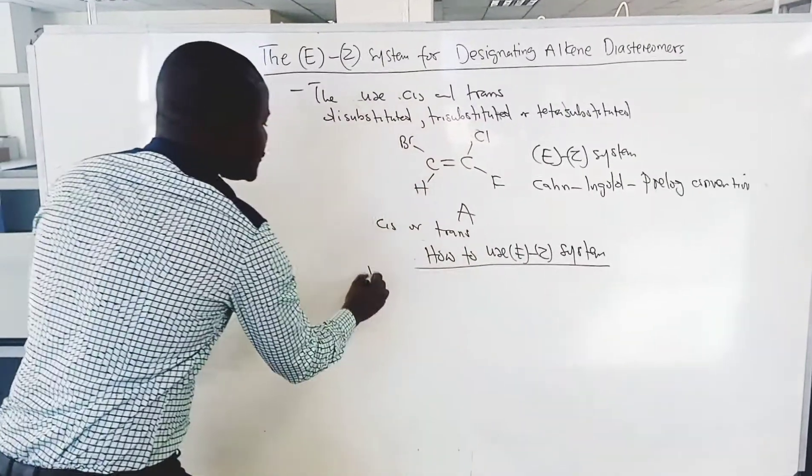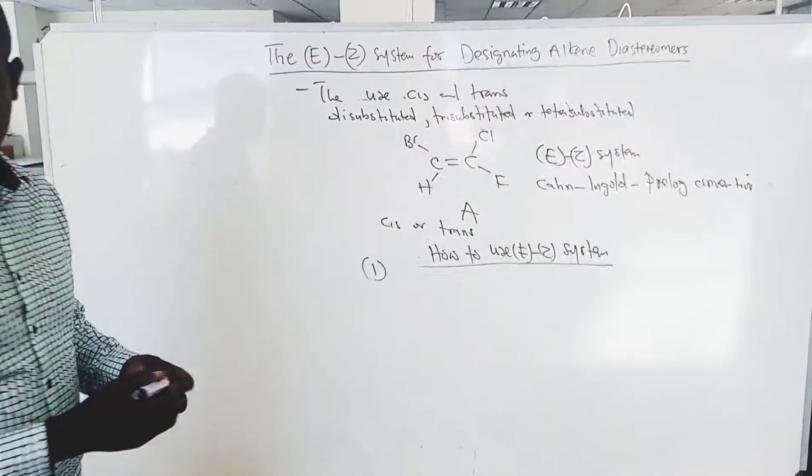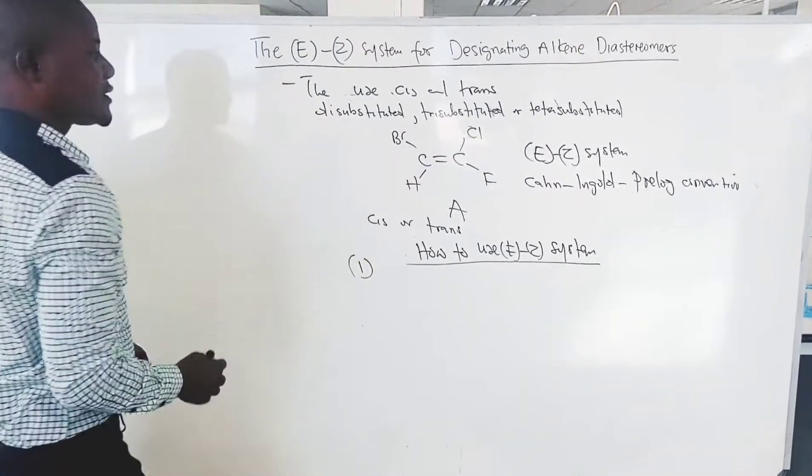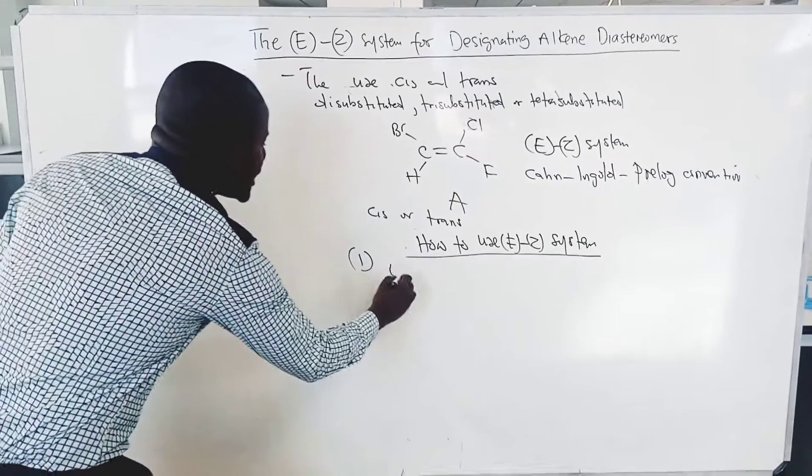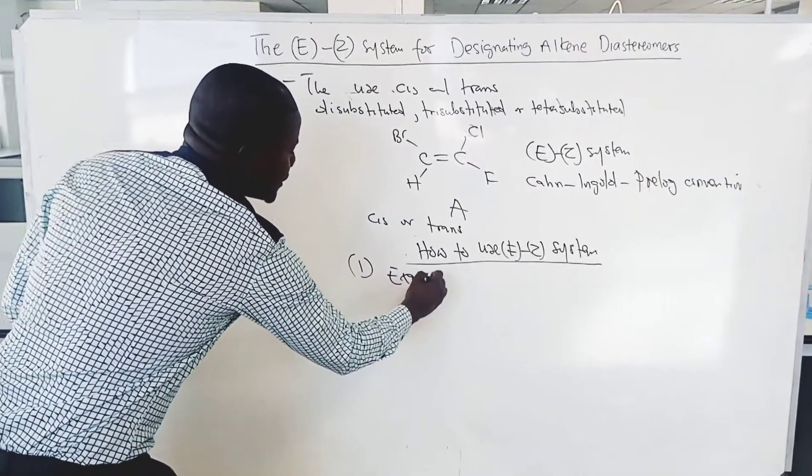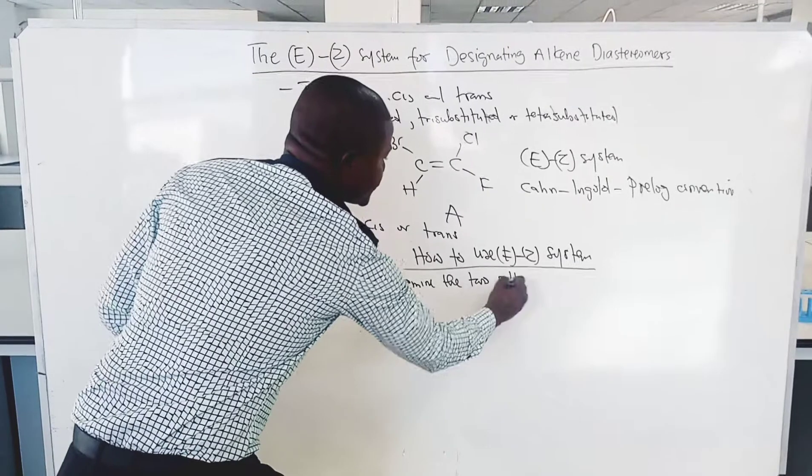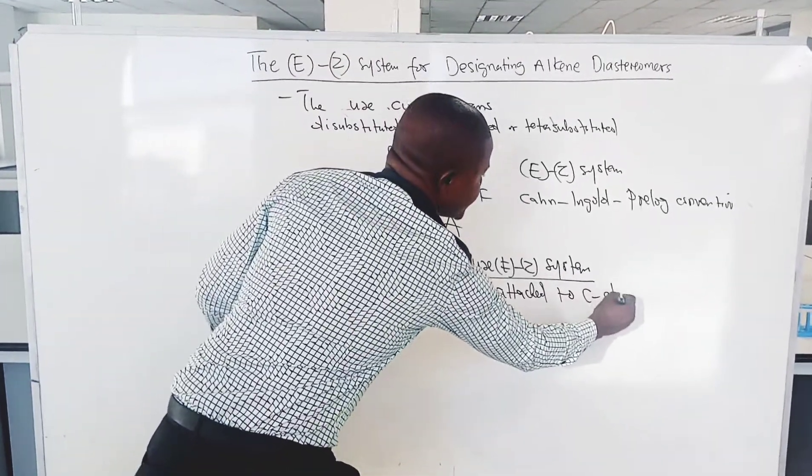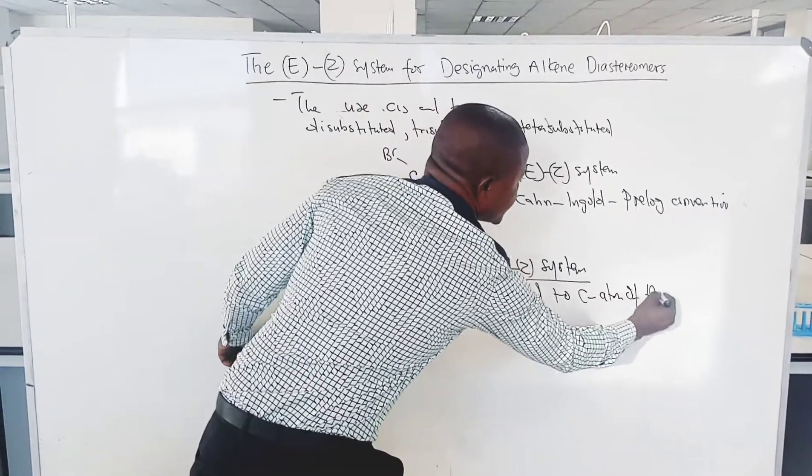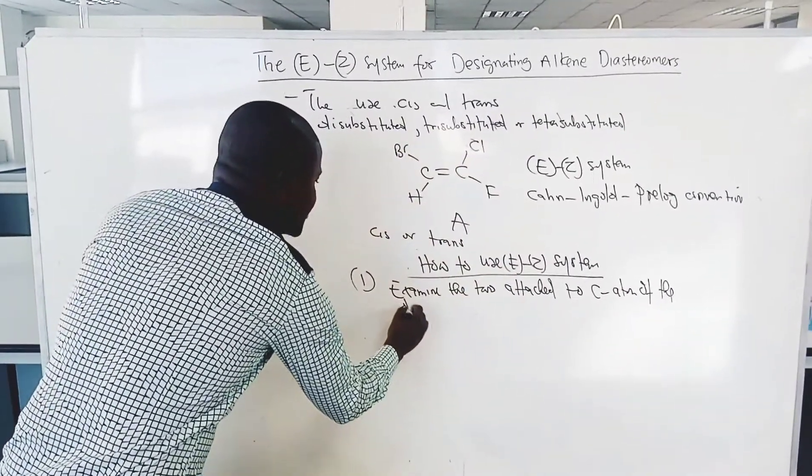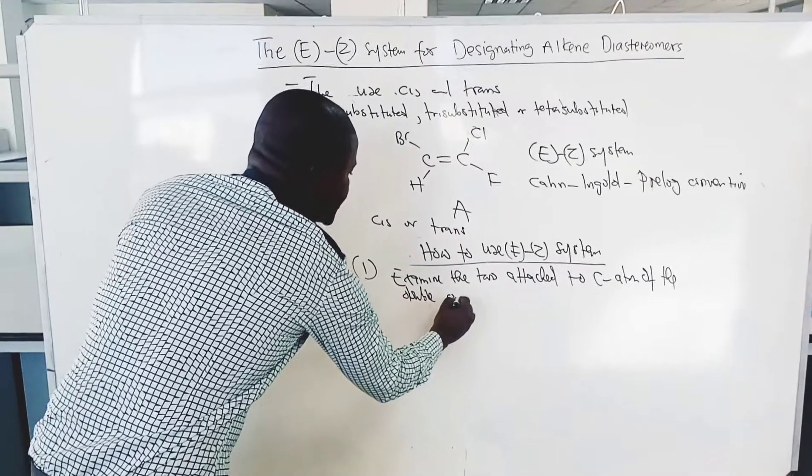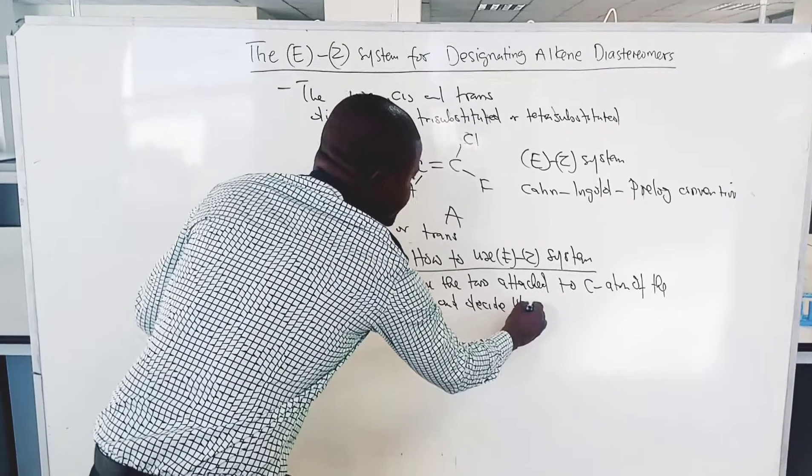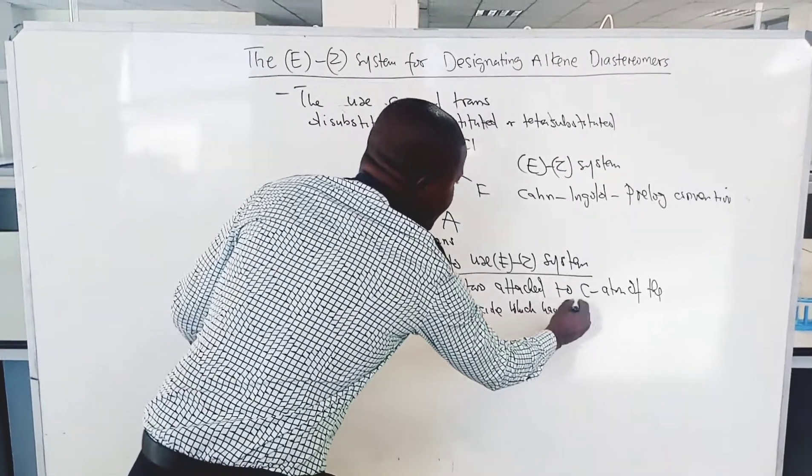So, first you need to examine the two groups attached to each carbon atom of the double bond and decide which has a higher priority.